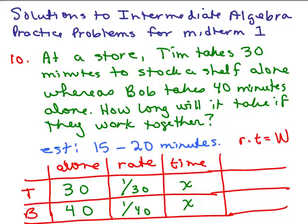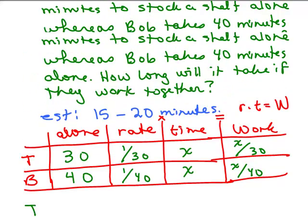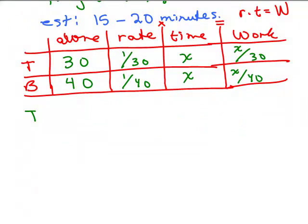Their work done is the product of their rate and their time. So rate times time equals work. So Tim will get x/30 done, and Bob will get x/40 done. And what we want is that the whole job gets done, so Tim and Bob, Tim's work plus Bob's work equals 1 job.